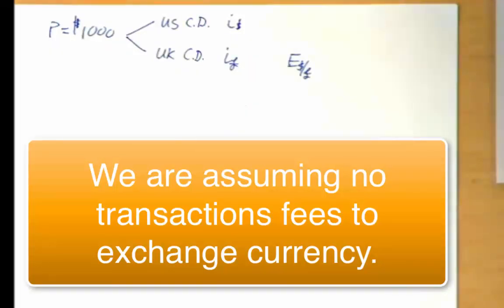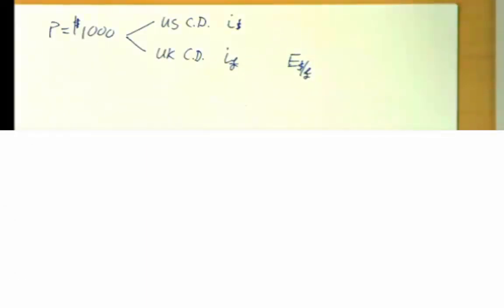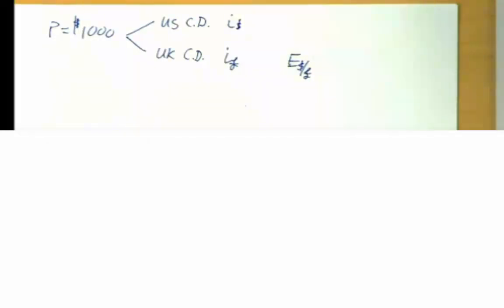The investor takes the pounds acquired, purchases the British CD, lets it sit for a year, earns interest, then brings it back. But to calculate how much their dollars have changed in value, they have to convert back to dollars using the exchange rate that prevails one year from now. What is that exchange rate? Nobody knows. So the investor must form expectations about the future exchange rate, because it will matter greatly in affecting the rate of return on that investment.